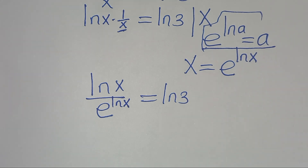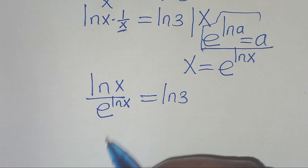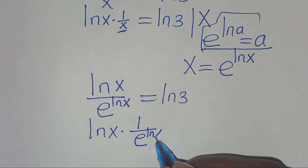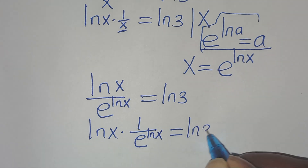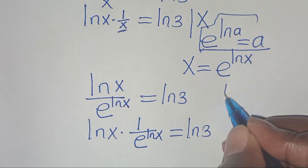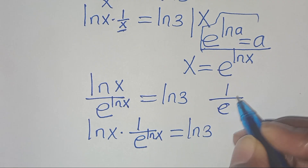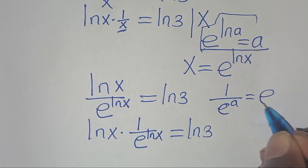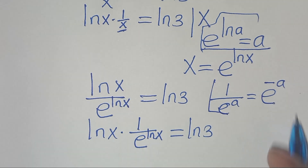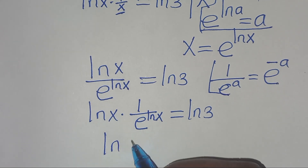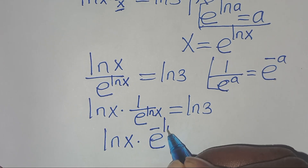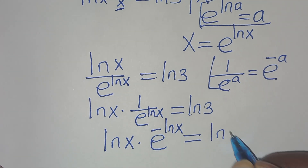The next step: this is the same thing as ln(x) times 1 over e to the power of ln(x), this is equal to ln(3). Now, 1 over e to the power of ln(x) is in the form of 1/e^a, which can be expressed as e to the power of minus a. Applying this property, we have ln(x) multiplied by e to the power of minus ln(x), this is equal to ln(3).